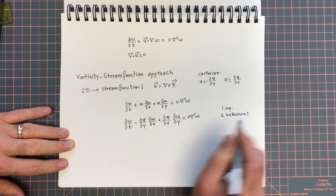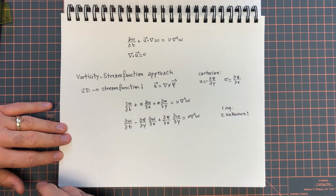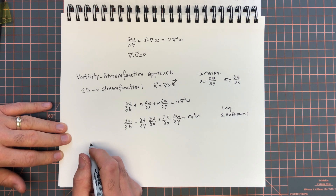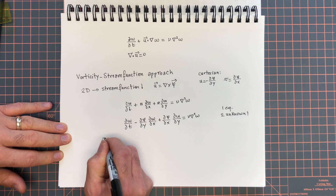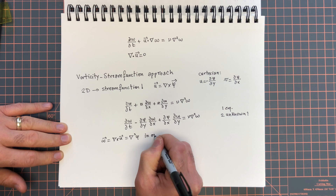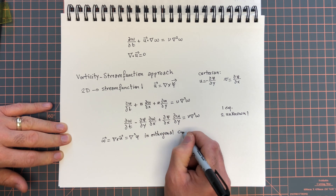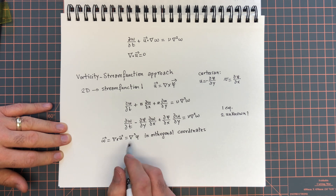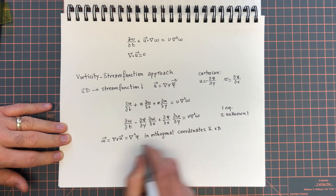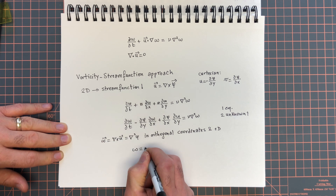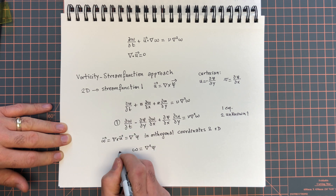How do we get an equation for ψ? There's a relation between omega and ψ that we showed previously when we set out to do the Stokes equation. Omega equals the curl of u, which equals ∇²ψ in orthogonal coordinates and in 2D. This essentially closes our system of equations: equation 1 is the vorticity transport equation, and equation 2 is ω = ∇²ψ.